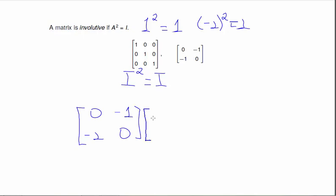So we have this matrix times itself. So we get zero plus one, negative one, or zero plus zero, zero plus zero, and one plus zero. So we got the identity back.